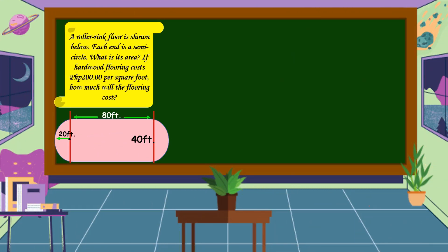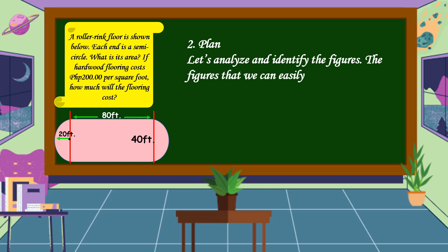After we understand the problem, the next step is we are going to make a plan. Let's analyze and identify the figures. The figures that we can easily identify are the rectangle and the two semi-circles. Find the area of each figure.